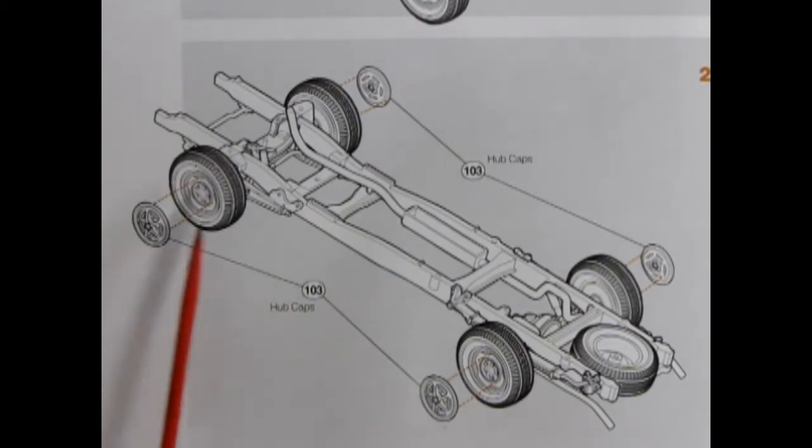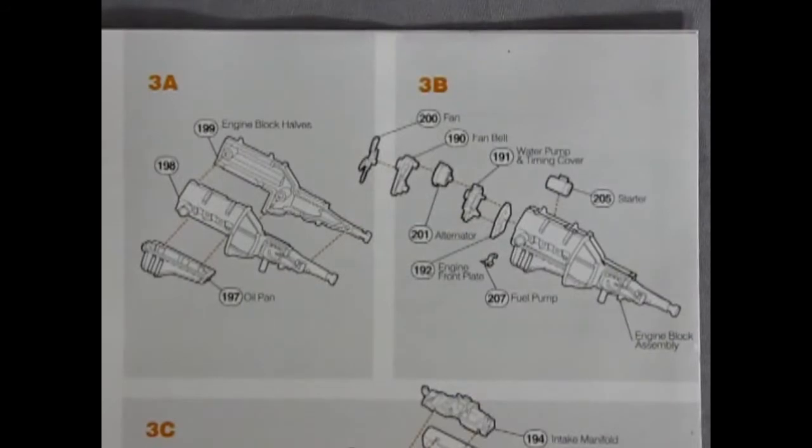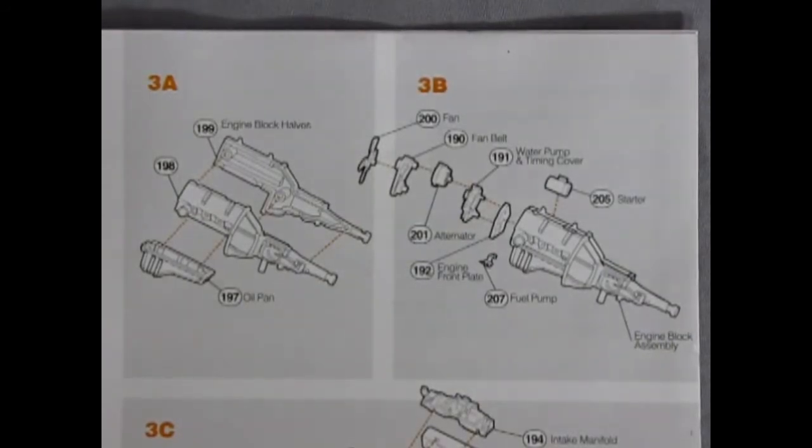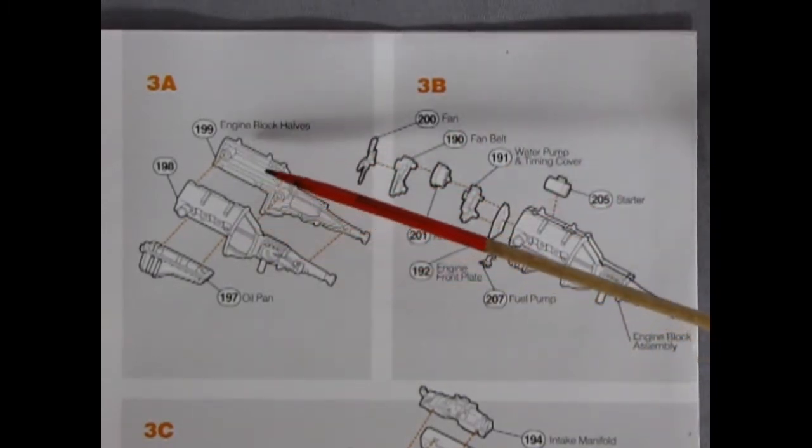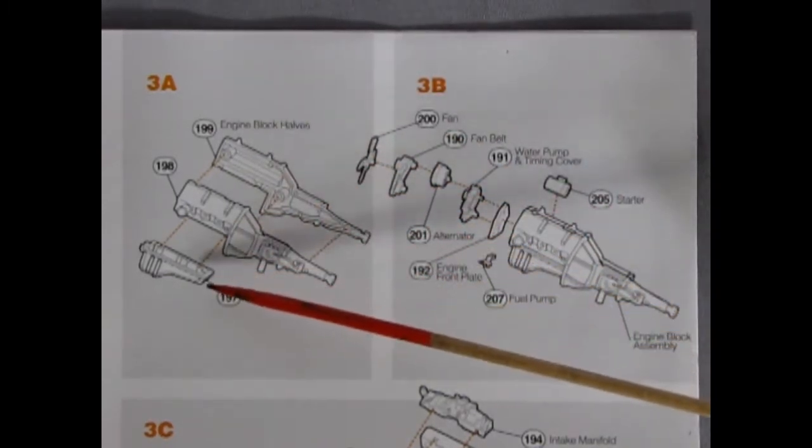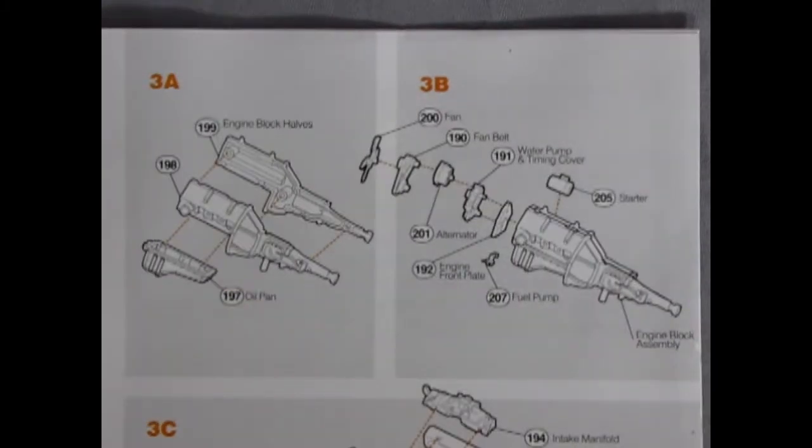Are you ready to build this really cool 302 Ford V8 engine? Well if so you got a real nice treat going on here. We have our right and left hand side engine block with our oil pan. Next up in our engine assembly we get to glue the fan to the fan belt with the alternator, the water pump and timing cover, our engine front plate, fuel pump and starter motor all to the engine block assembly.